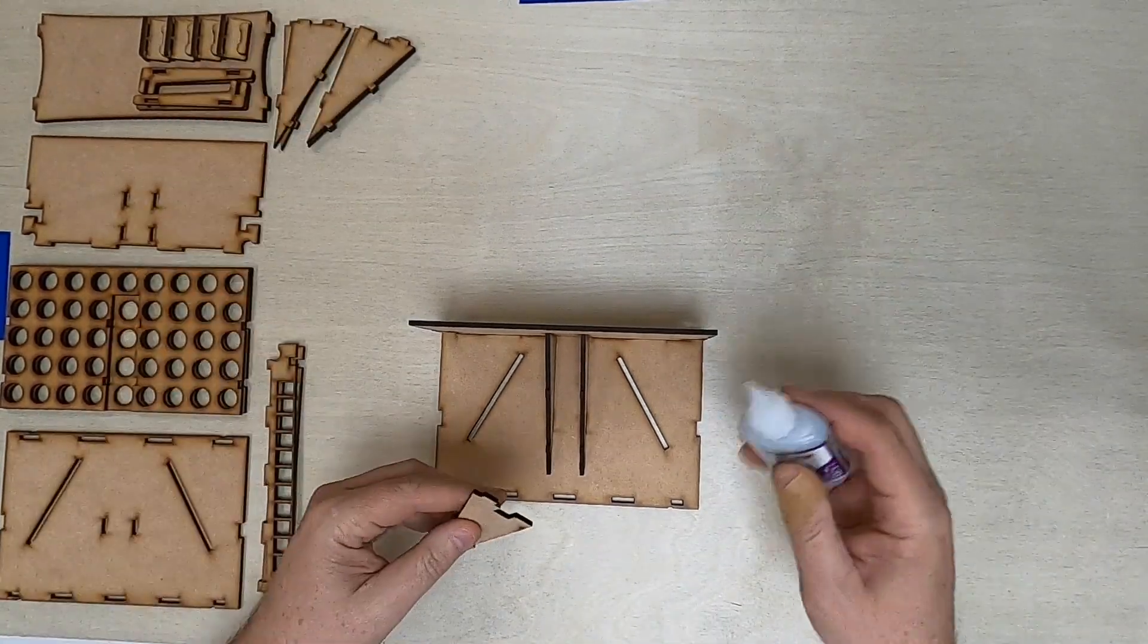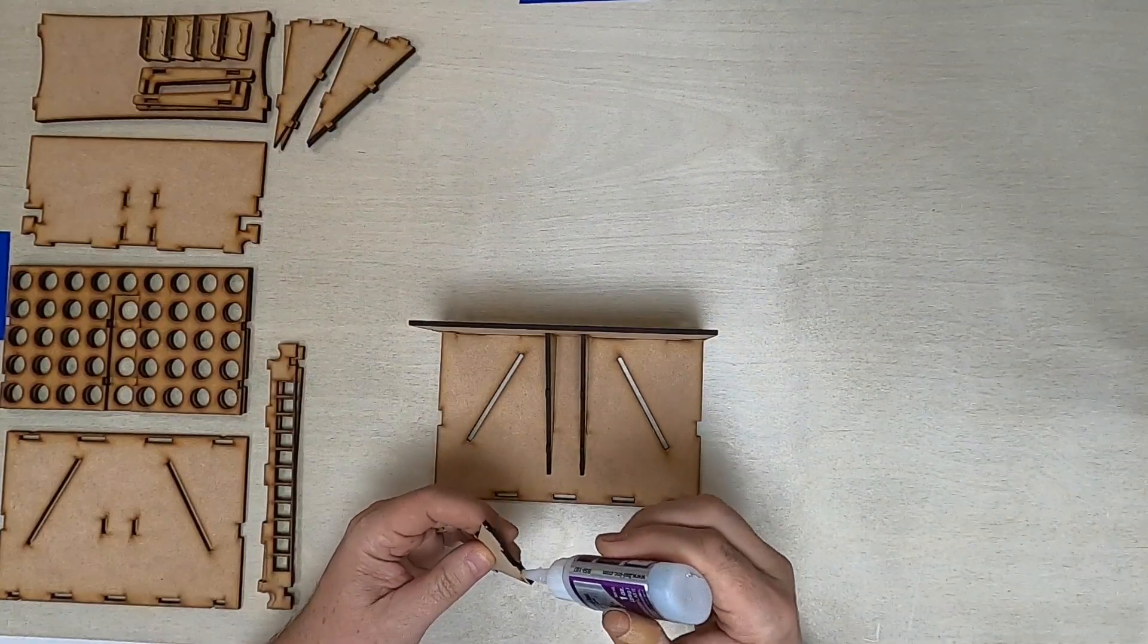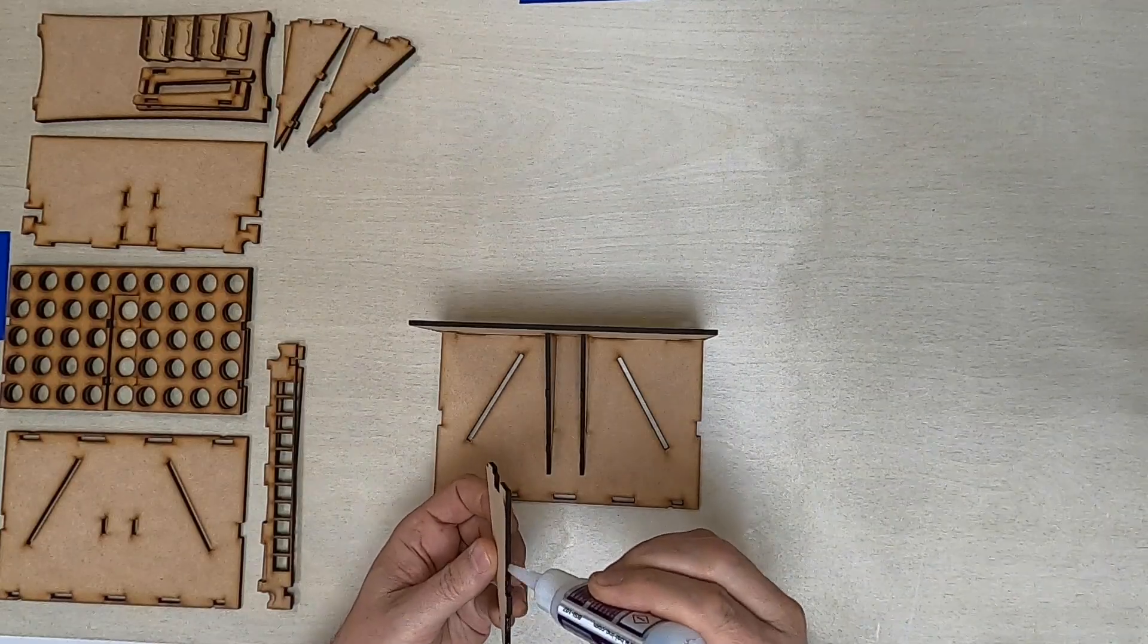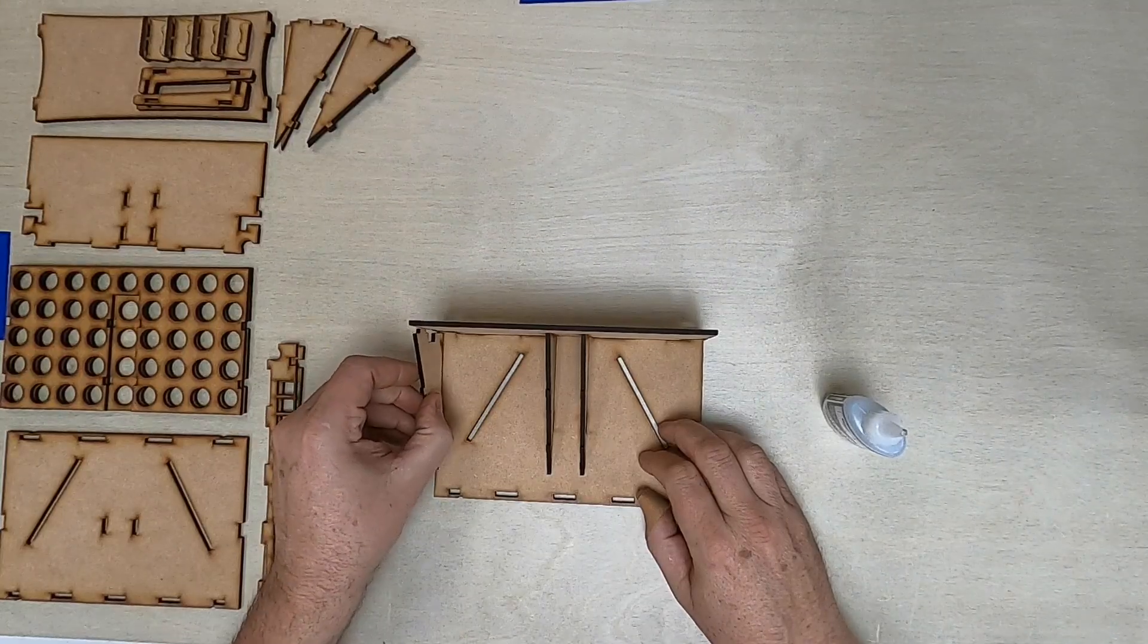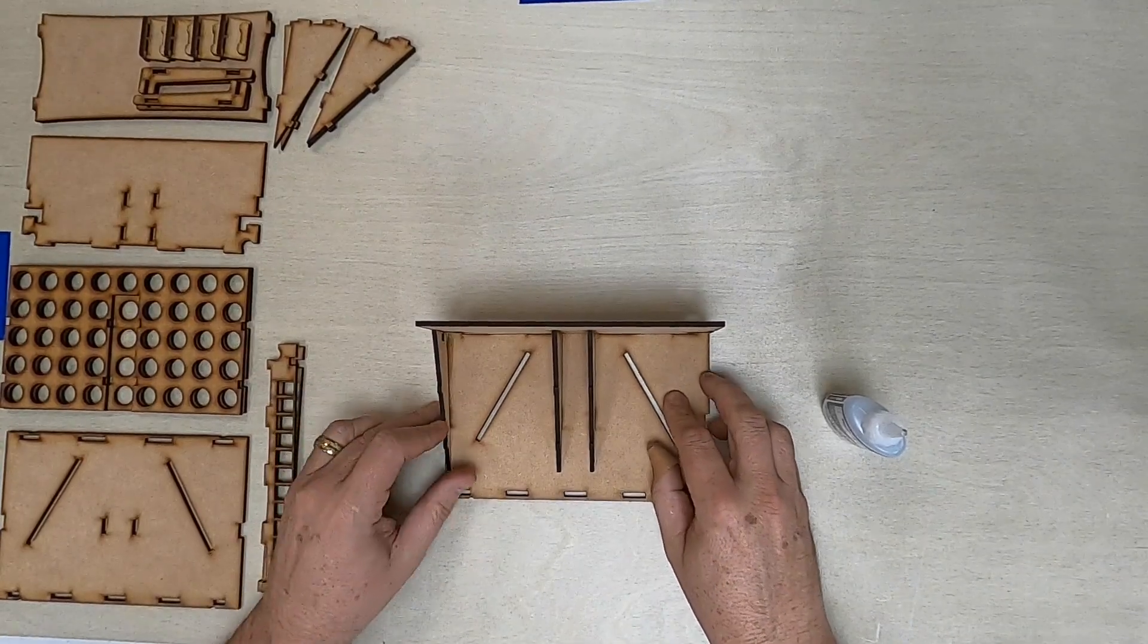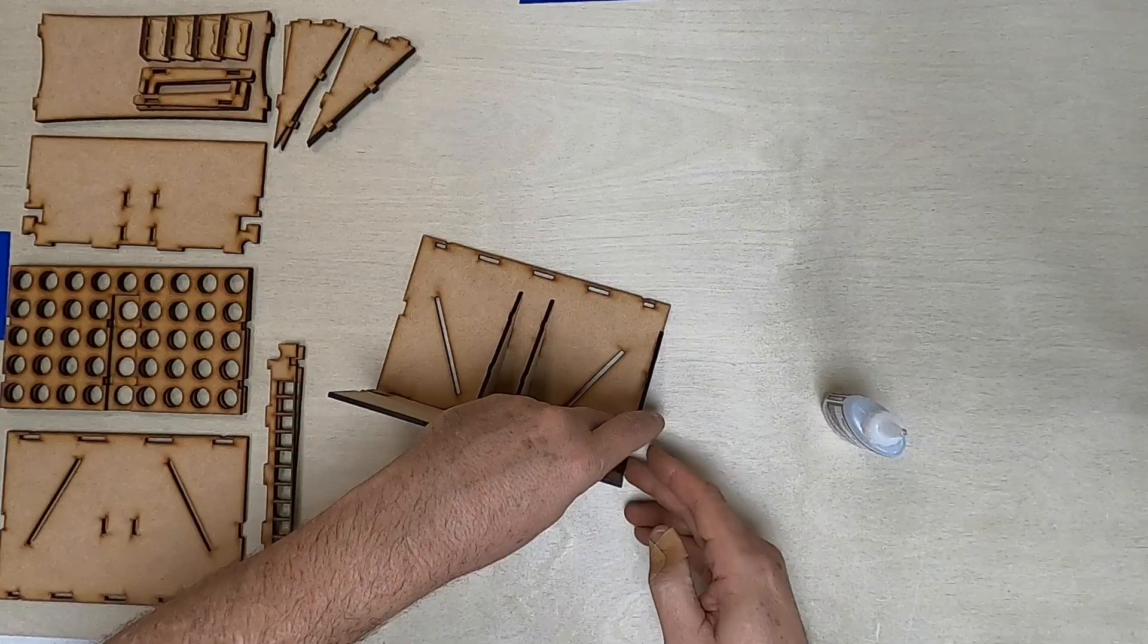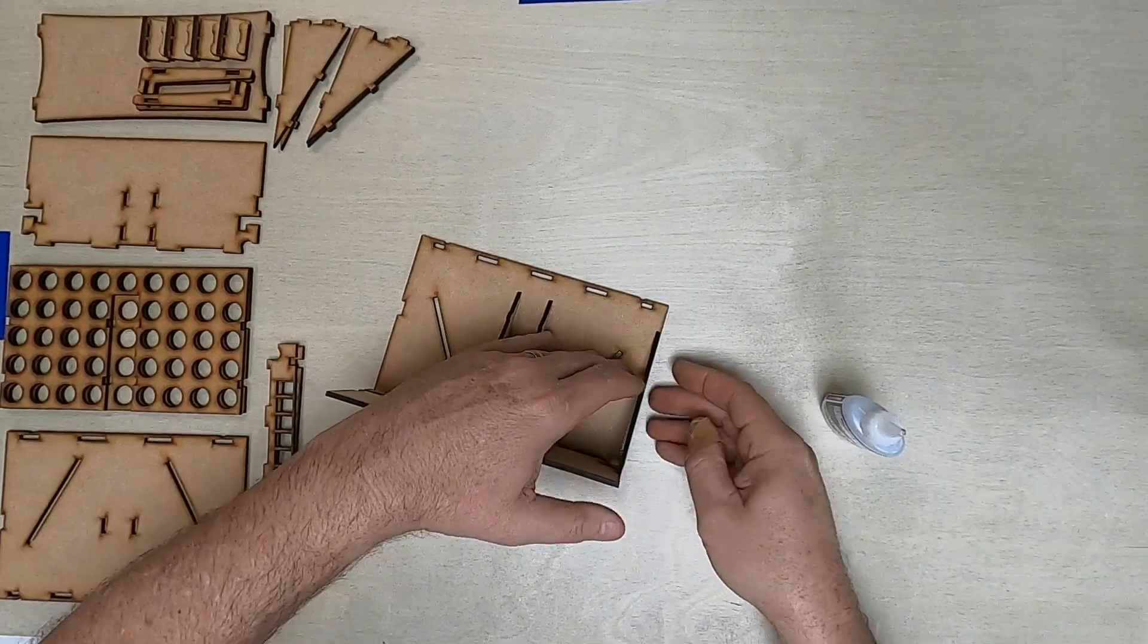Now we can add the back piece on here. Simply - oops, I guess we need to do the bottom as well. Put some glue down here. And then this will go right in this spot. Right like that. And you'll just want to make sure that it's flush with everything here.